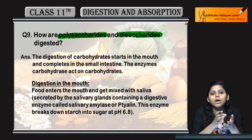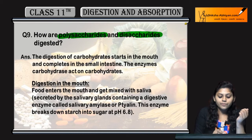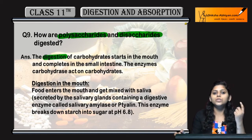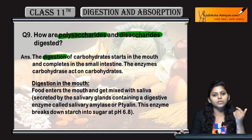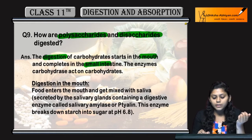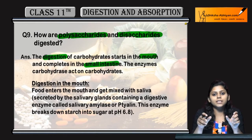Digestion of carbohydrates starts in the mouth and is completed in the small intestine. Carbohydrates are digested by enzymes.